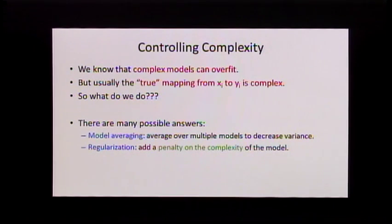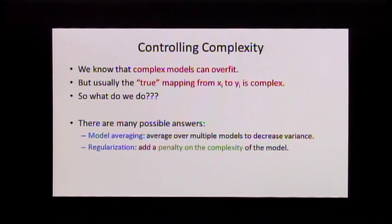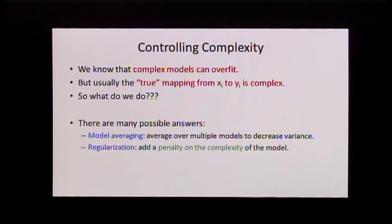So there are a few answers to that question. One of them — when you look at machine learning competitions, what the winning systems do is often model averaging. To try and decrease the variance and decrease overfitting, they'll fit many many different models, but they won't trust any of them — they'll average over many different models. If the errors made by the different models are uncorrelated with each other, you can show that the averaging will actually reduce your overfitting, so you'll do better on the test set. That's not really an optimization issue, so I'm just mentioning it as the alternative approach.